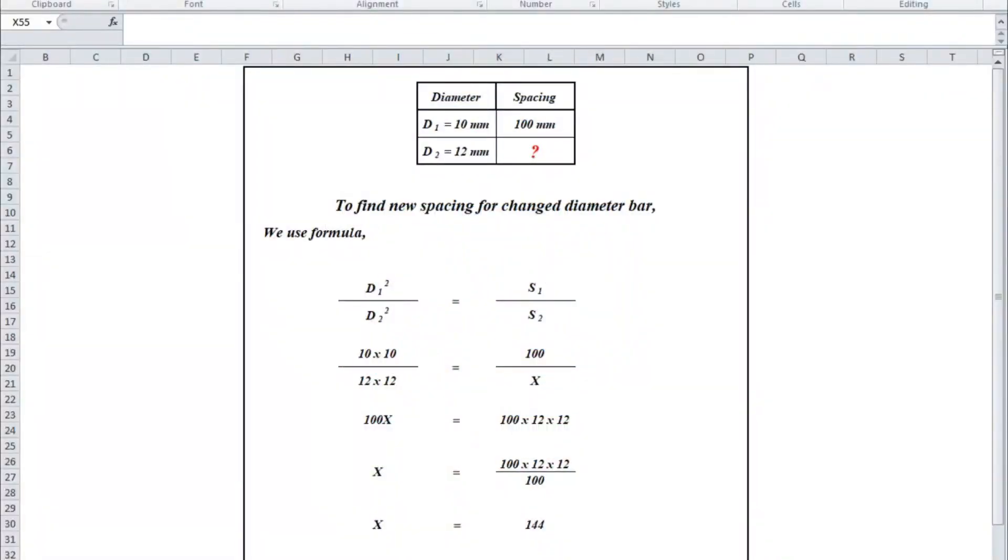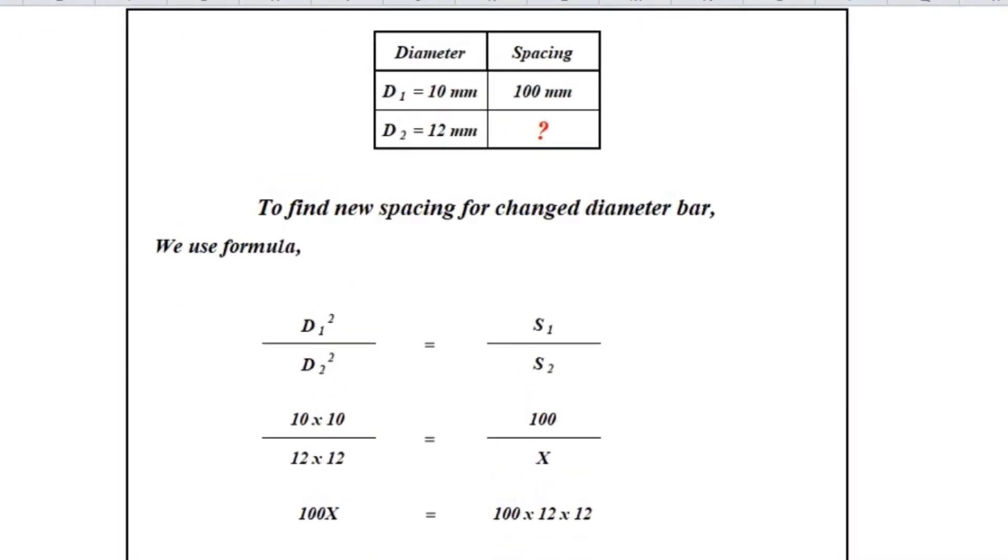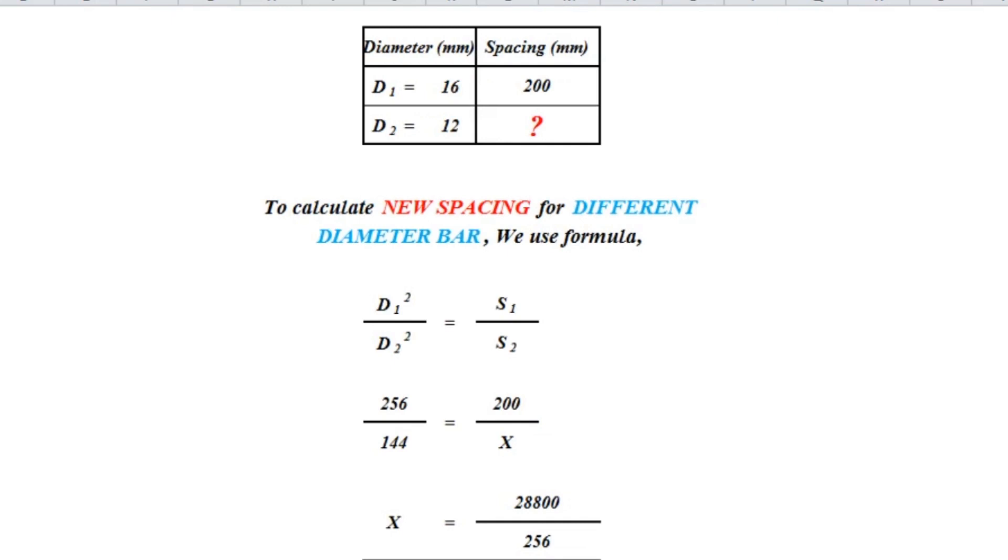This is the formula to calculate the new spacing. If 10mm diameter bar went out of stock, we can use either 12mm or 8mm diameter bar instead.